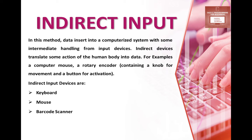Indirect input method: data is inserted into a computerized system with some intermediate handling from input devices. Some intermediate handling involves encoding of the computer, which is converted into computer binary. Direct devices translate some action of the human body into data. For example, a computer mouse. The mouse button is encoded. After that, the computer responds to them. Keyboard, mouse and barcode scanner are indirect input methods.